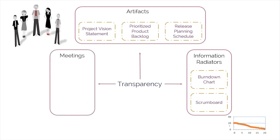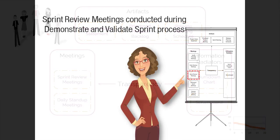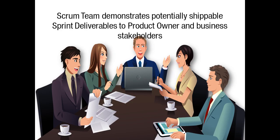Daily stand-up meetings, conducted during the conduct daily stand-up process, have all team members report what they've done the previous day, what they plan to do today, and any problems preventing them from completing their tasks in the current sprint. Sprint review meetings, conducted during the demonstrate and validate sprint process, have the Scrum team demonstrate potentially shippable sprint deliverables to the product owner and business stakeholders.